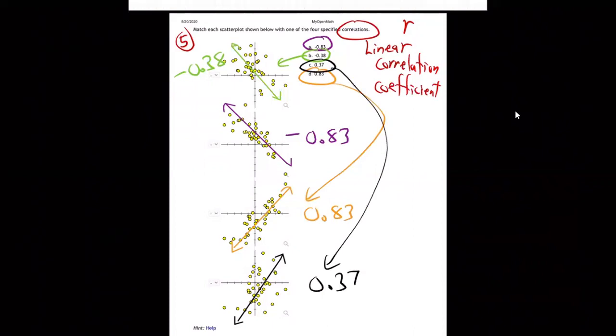It's going to be the 0.37. They're going up, but not very tight, not very close to 1.0, right? They're going up fairly loosely. So the tighter the dots fit, the closer we are to 1.0 or negative 1.0 if it's going down.